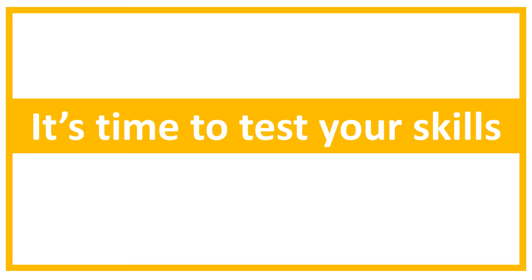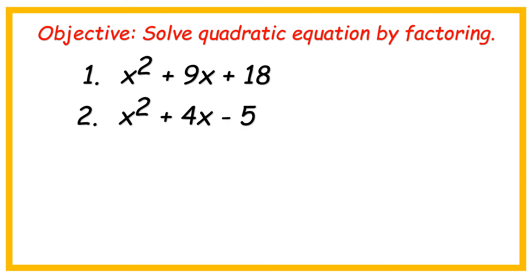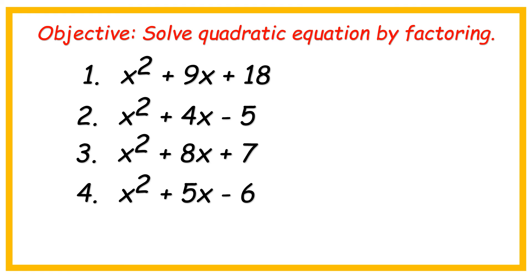It's time to test your skills! Your objective: solve quadratic equation by factoring. Number 1: x squared plus 9x plus 18. Number 2: x squared plus 4x minus 5. Number 3: x squared plus 8x plus 7. Number 4: x squared plus 5x minus 6. Number 5: x squared plus 7x plus 10. You can pause this video if you need more time.